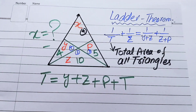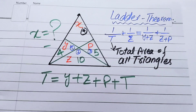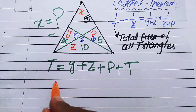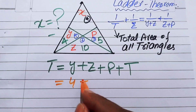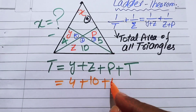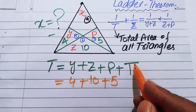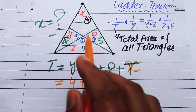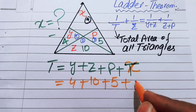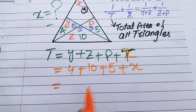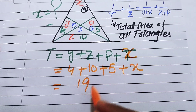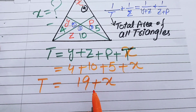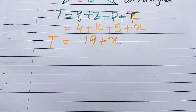We substitute all the values. The value of y is 4, z is 10, and p is 5. The area of the fourth triangle is denoted by x. Adding all areas: 10 + 5 + 4 = 19, so t equals 19 + x.